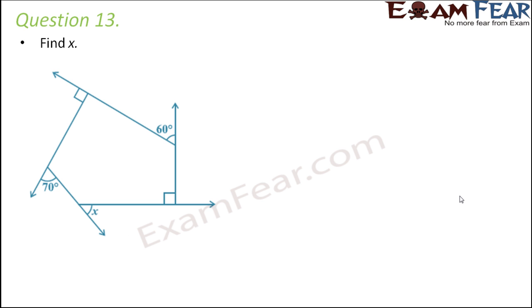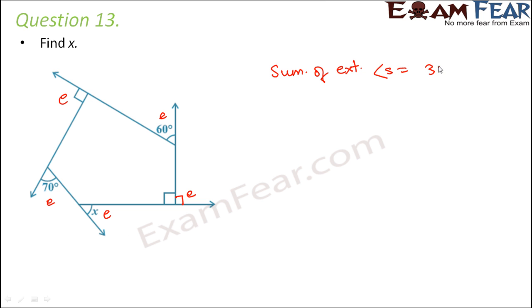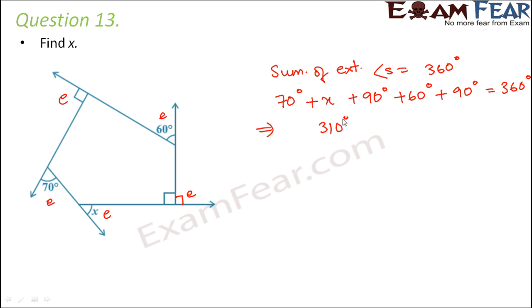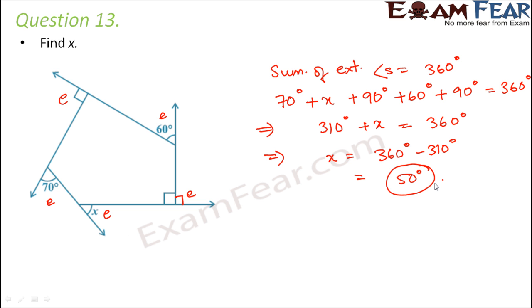Question number 13: Here also we have to find the value of x. All the marked angles are exterior angles. The only exterior angle we don't know directly — since one angle is 90 degrees and it is on a straight line, the other part is also 90 degrees (180 minus 90 equals 90). Now applying the rule that the sum of exterior angles of a polygon equals 360 degrees: 70 plus x plus 90 plus 60 plus 90 equals 360 degrees. This gives 310 plus x equals 360, so x equals 50 degrees.